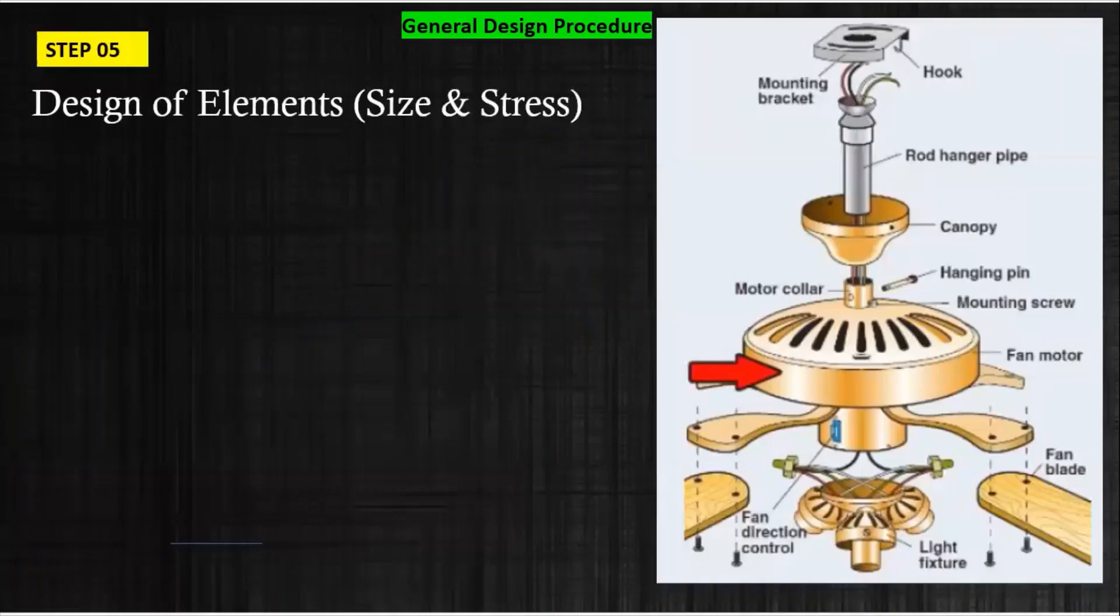Then the fifth is the design of elements. Design of element means we are actually finding out the sizes and the stress analysis calculation. The design engineer is aware there are a number of components or elements you can see: the hook, rod, pipe, hanging pin, motor, blades. Each part's size is very important. Now the design engineer is aware about all the four steps: recognition of need, mechanism used, the forces acting on each element. He has already done the material selection, but the design engineer must know which type of stresses are produced.